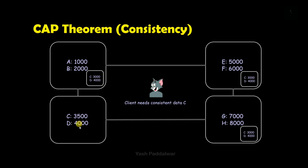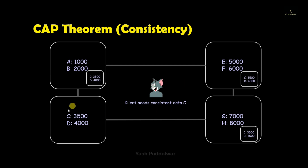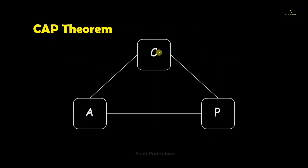So node AB has now been updated to 3500, similarly the replica inside node GH containing C data has been updated, and the same for node EF. Now if the client asks for data stored in C, they will get the data containing the most recent write operation. But remember that making data consistent across all nodes takes some time, so the most consistent data may not be available in all nodes at that moment. Hence if the data is consistent, it may or may not be available always.